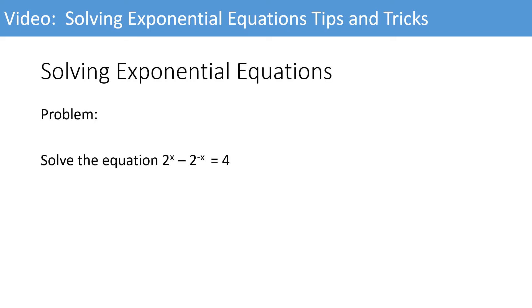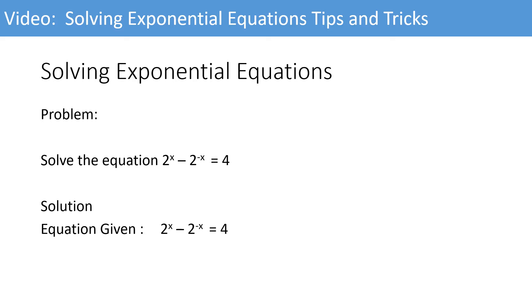Let's start with this example. Solve the equation: 2 to the exponent x minus 2 to the exponent negative x is equal to 4. We take the equation and write it down as given: 2 to the exponent x minus 2 to the exponent negative x is equal to 4.